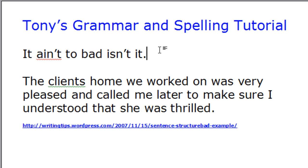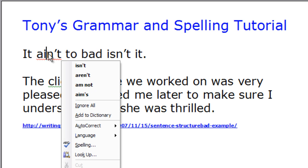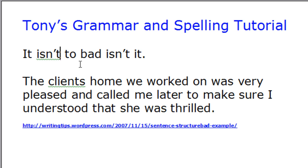The first thing I want to do here with the word 'ain't' is — Word is suggesting it's a misspelling. I'm going to right-click on it, and what we're dealing with here is not so much a misspelling as much as a grammar issue. It's suggesting to me that the word shouldn't be 'ain't' but should be 'isn't' — 'It isn't too bad, isn't it.' Now obviously this is a really bad sentence and I set it up this way on purpose, but let's go in and change it to 'isn't' and see what happens.